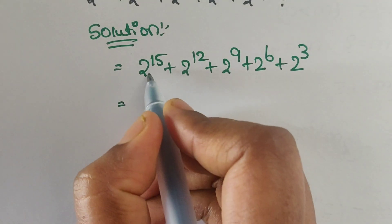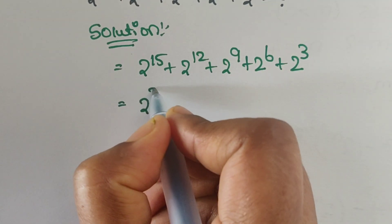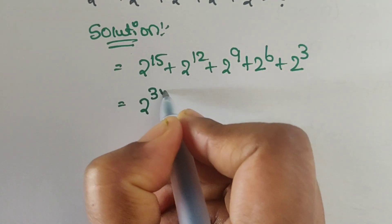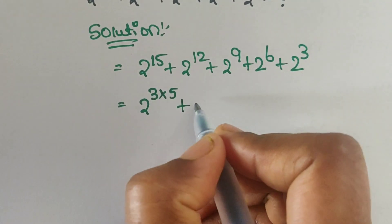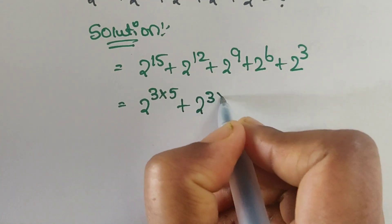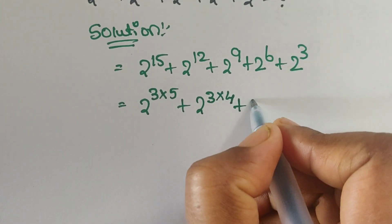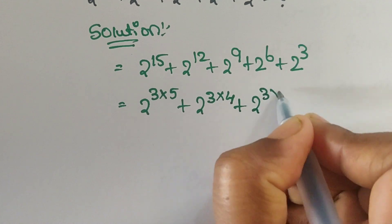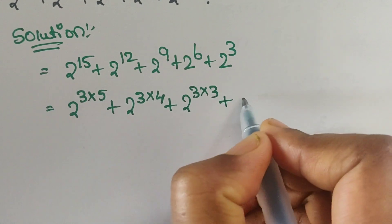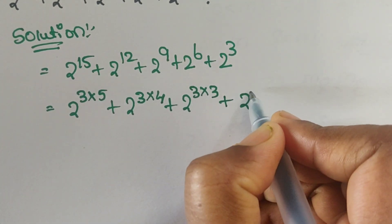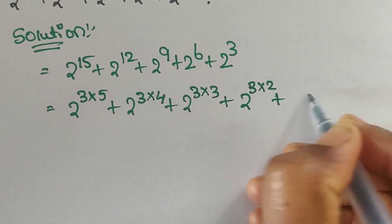First, 2 power 15 — we can write this as 2 power (3 times 5), since 3 times 5 equals 15. Plus 2 power 12, which is 2 power (3 times 4). Plus 2 power 9, which is 2 power (3 times 3). Plus 2 power 6, which is 2 power (3 times 2). Plus 2 cube.